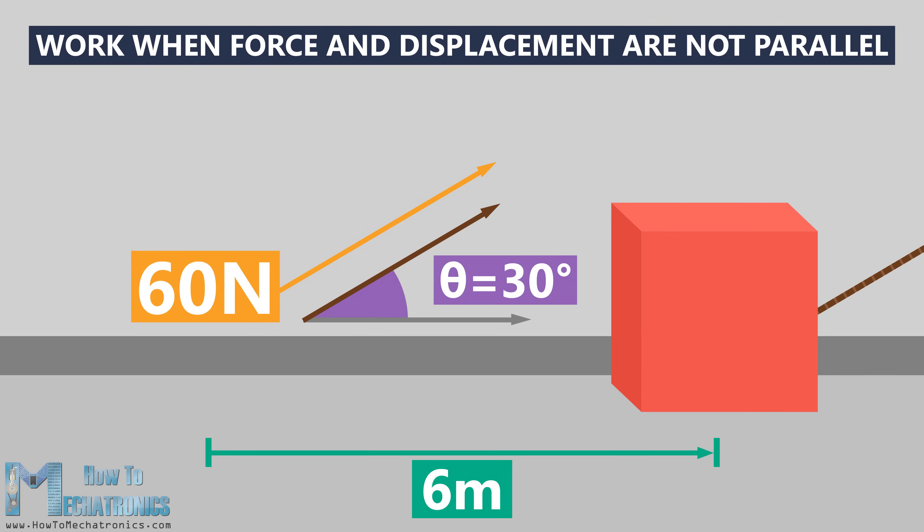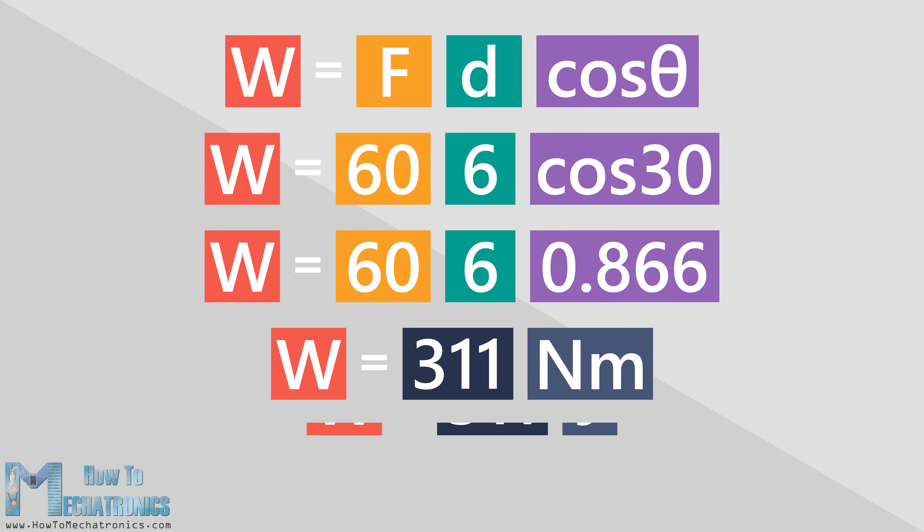Using the equation, we can calculate the work. The angle theta here is 30 degrees and cosine of 30 degrees is 0.866. Now we have everything we need to calculate the work. We plug everything in and we get 311 Joules, which is less work in this case.